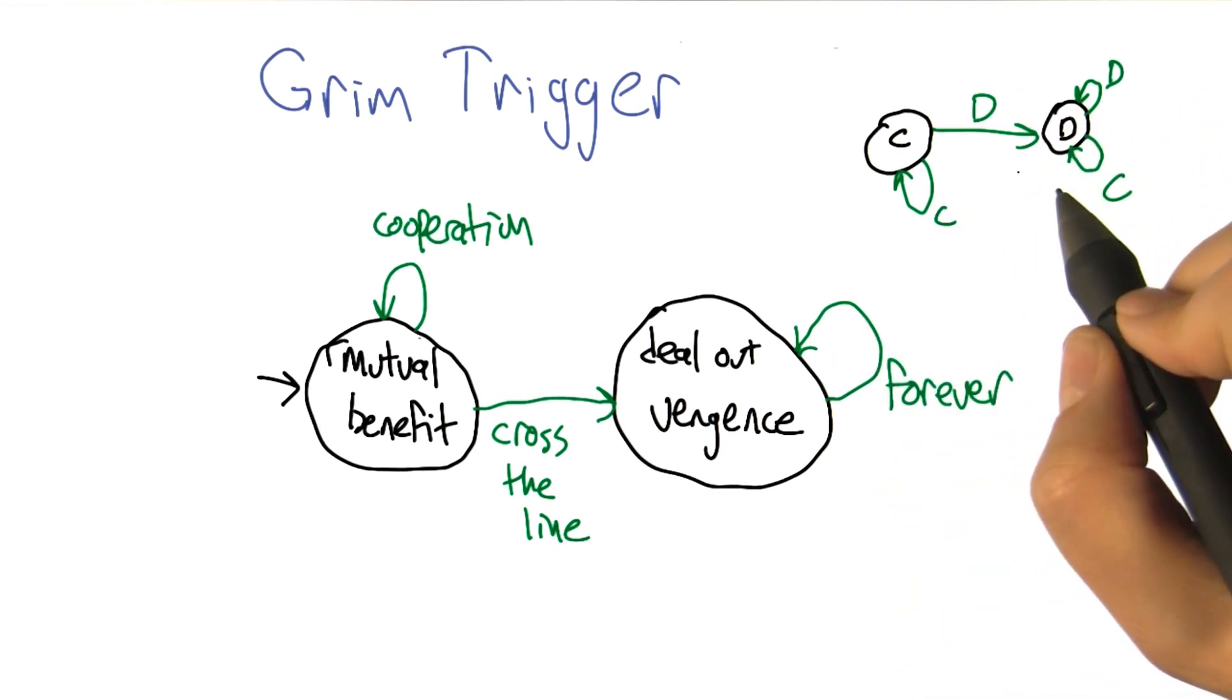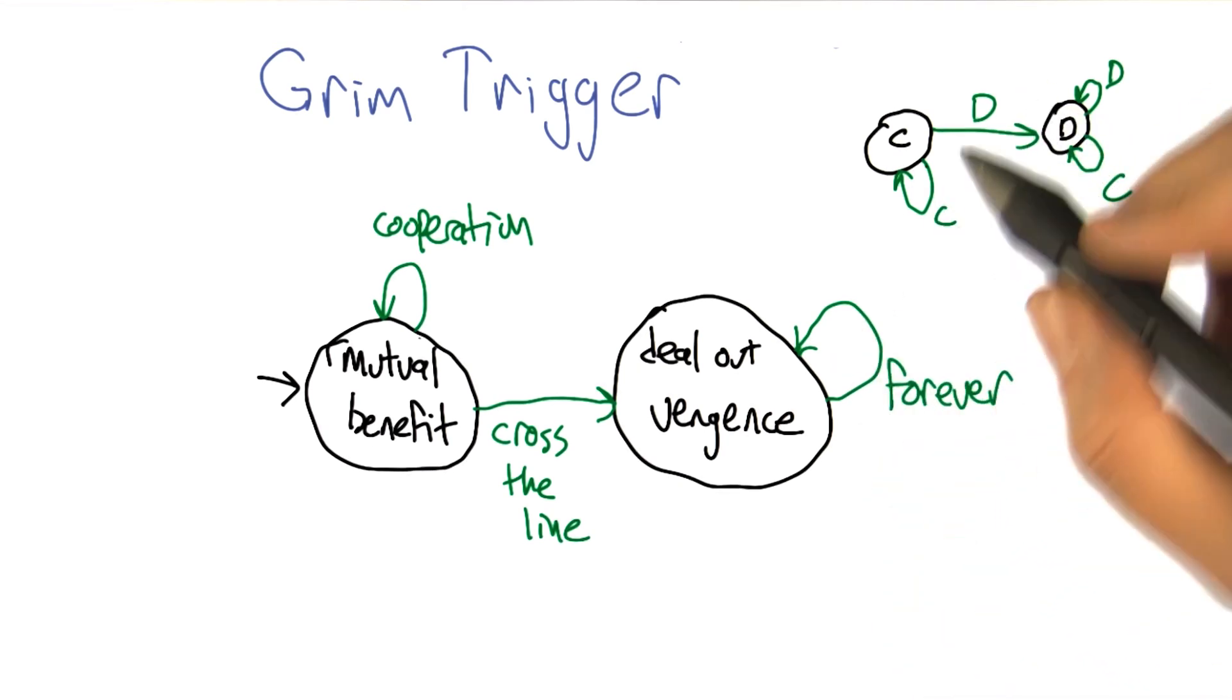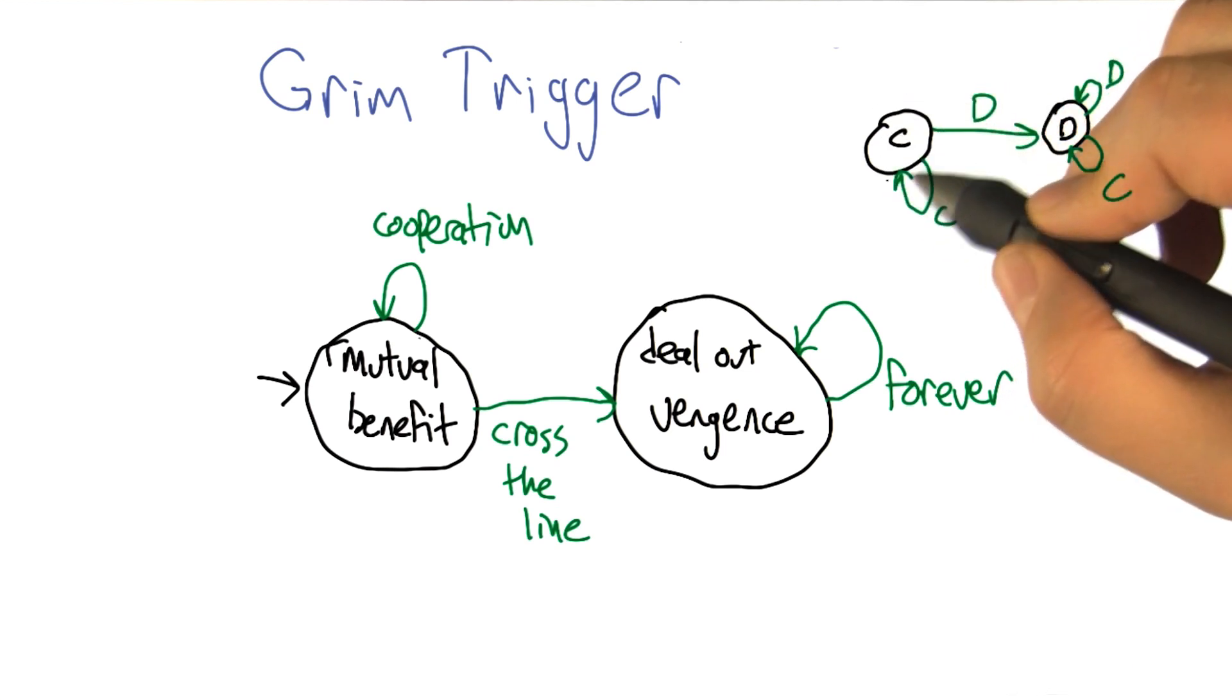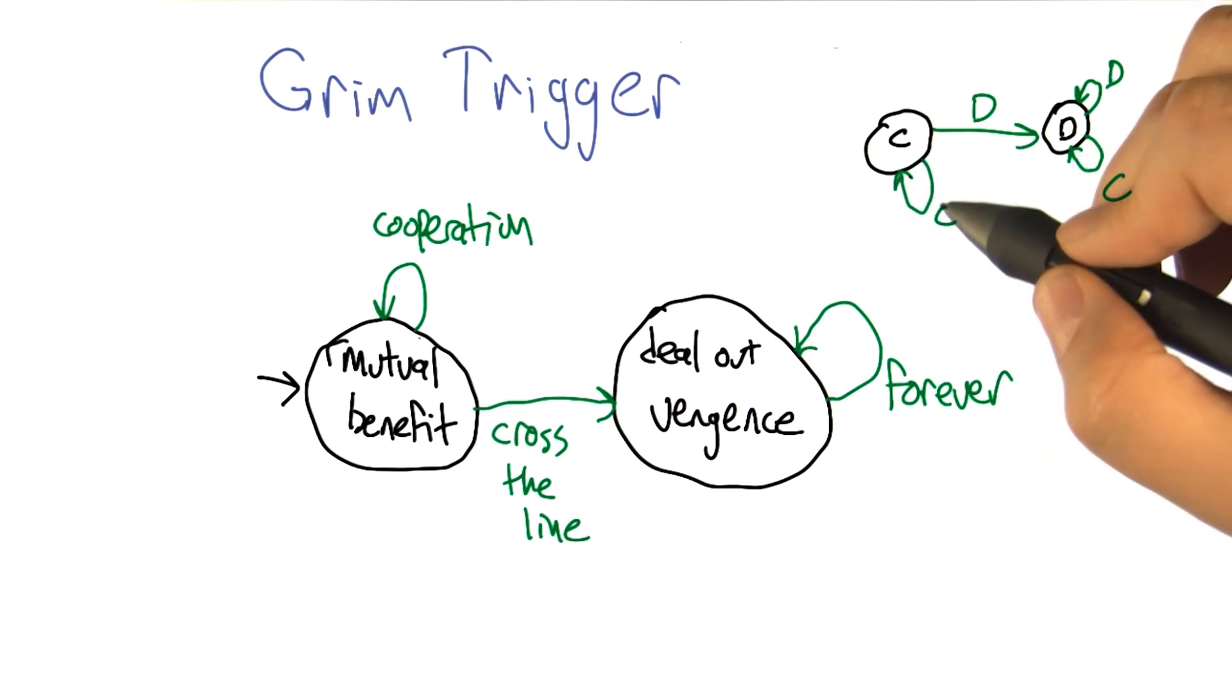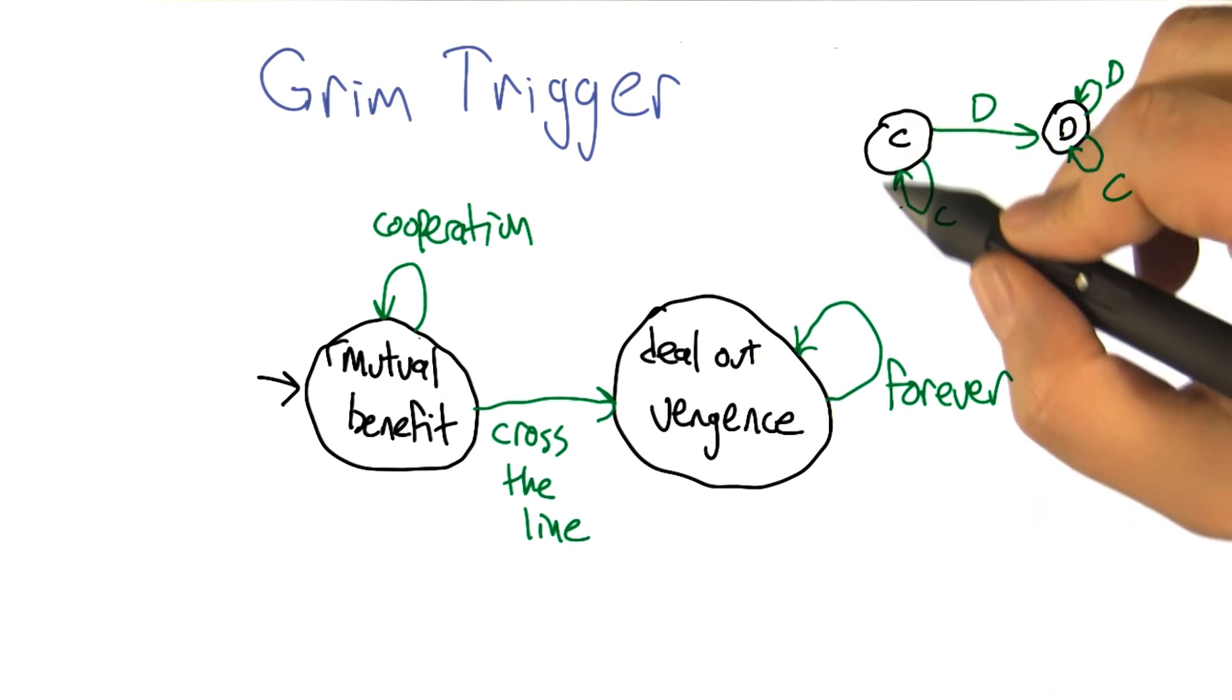here's what that looks like in the context of Prisoner's Dilemma, right? So cooperation is the mutually beneficial action. And as long as you continue to cooperate with me, that's this C arrow here, then I will continue to cooperate with you.